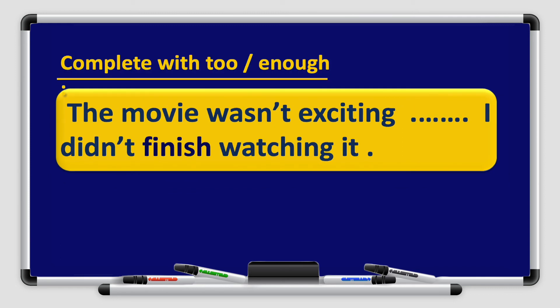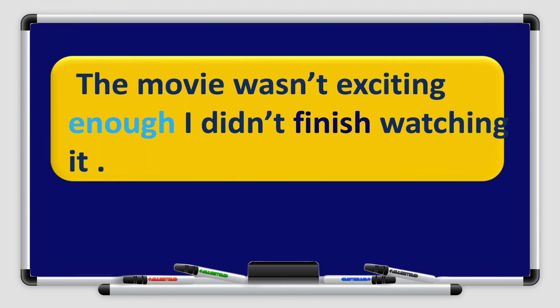Complete with 'too' or 'enough': The movie wasn't exciting ___. I didn't finish watching it. These sentences are in negative. Where is the adjective — is it before or after the space? The adjective 'exciting' comes before the space, so the missing word is 'enough.' The movie wasn't exciting enough — I didn't finish watching it.